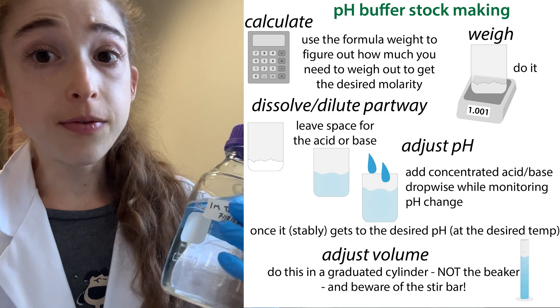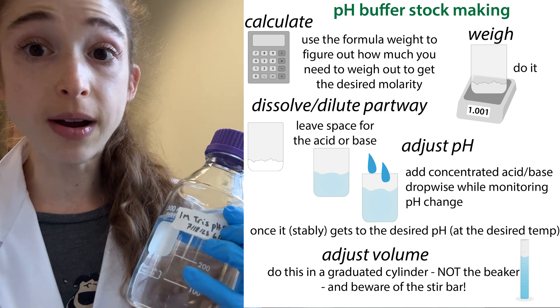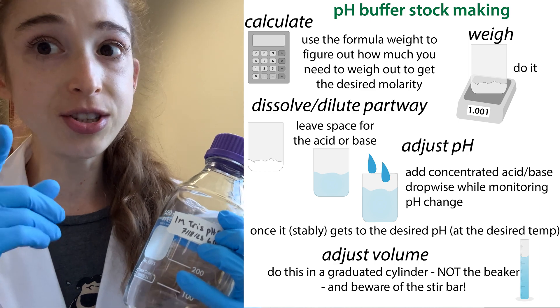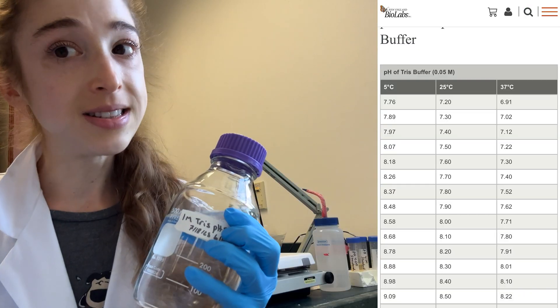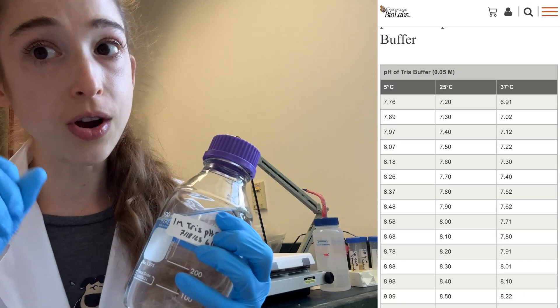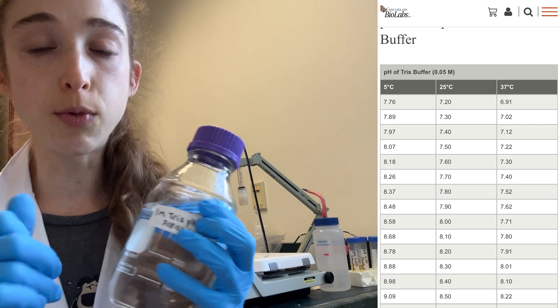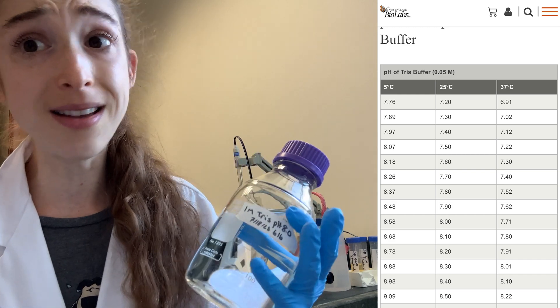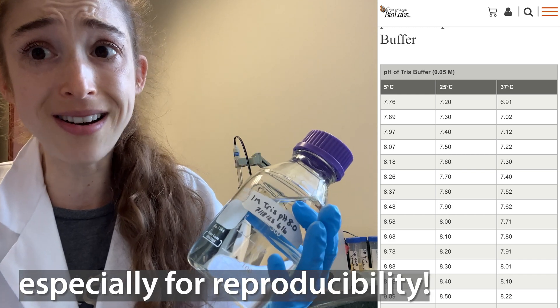So that's the basics of remembering to pH your buffer and do it at the temperature you want it at, because that temperature can affect things. As you go down in your temperature, you're going to go up in your pH. You're going to make things more basic, fewer protons around, which might have an impact, might not, but it's better safe than sorry, right?